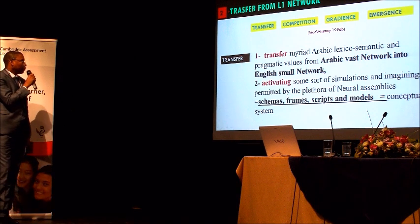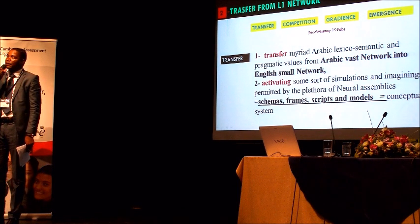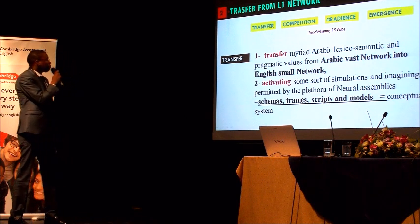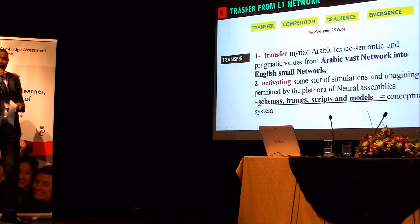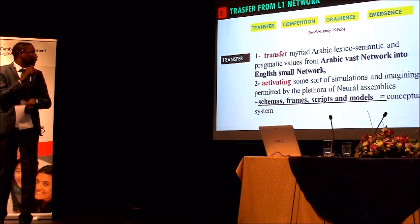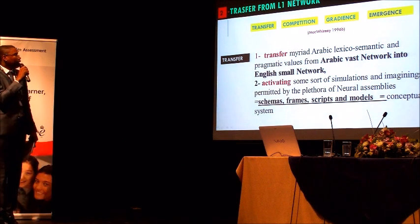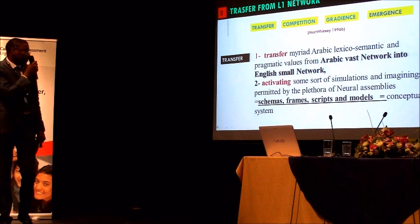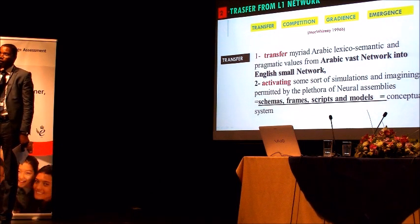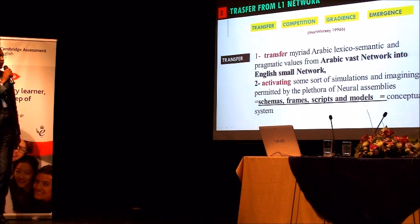The second point: transfer from the L1 network. Connectionist models refer to the following salient characteristics of neural network in the context of language acquisition. With conceptualizing and producing collocational structures, for example, Arab students transfer a big number of lexical, semantic, and pragmatic values from the Arabic network into the neural network of the second language, and activate some sort of simulations and imaginings that are shaped by the frames, schemas, screens, and scenarios that populate the conceptualist system.